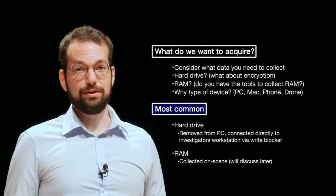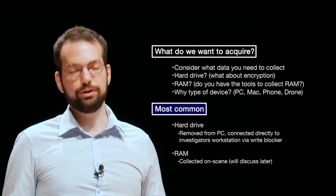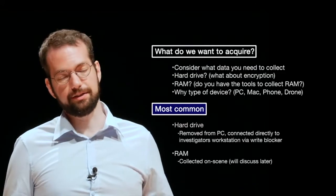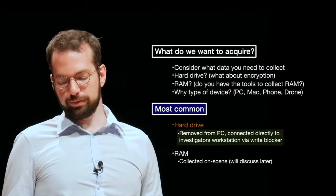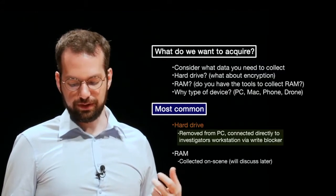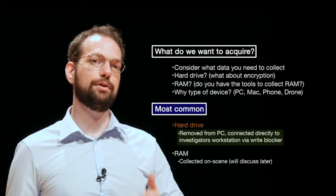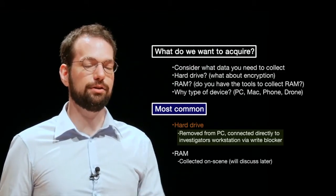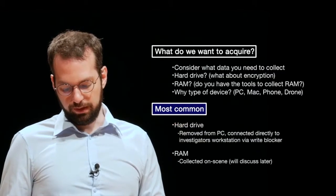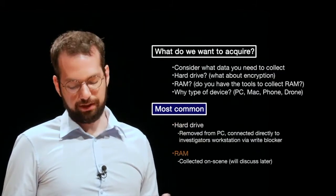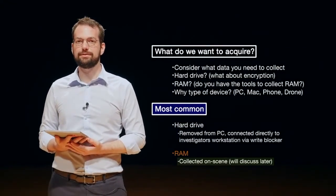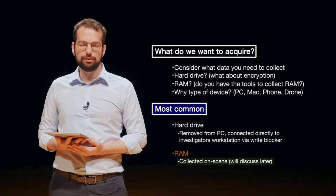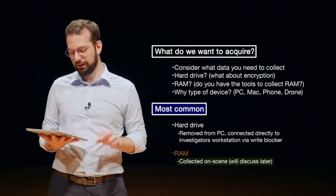The most common scenario in digital forensics is hard drive acquisition from a computer that's off. We take the hard drive out of the suspect's computer and image the drive directly — removing it from the PC and connecting directly to the investigator's workstation via write blocker. Always try to use a write blocker. RAM is collected on scene; the computer essentially has to be on to collect random access memory, and we normally do this during first response.